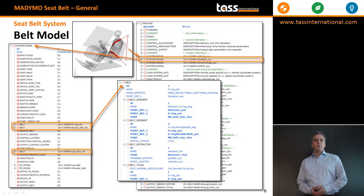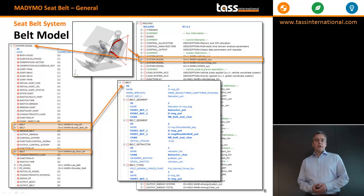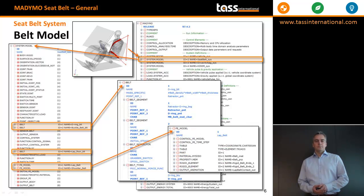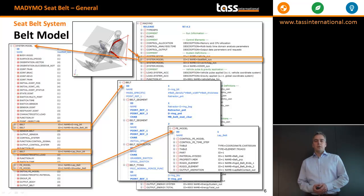Inside the belt elements, we see the belt segments, which are interrupted by the belt tieings. The finite element belt segments are each defined with a separate FE model — one for the shoulder belt segment and one for the lap belt segment.